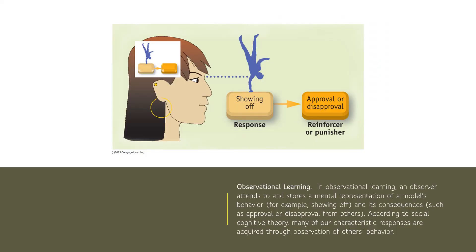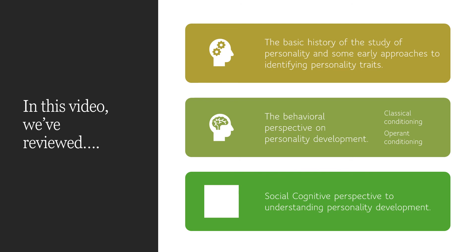Here we have observational learning, where the person is not only relying on the environment for shaping their personality but also on how they actively process that information. This moves us a little past strict behaviorism, as we're really looking at the role of cognition — we could call this a social cognitive theory. In this video, we reviewed the basic history of the study of personality and some early approaches, the behavioral perspective on personality development, and the relevance of classical and operant conditioning.